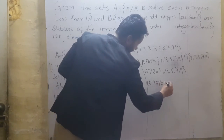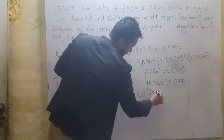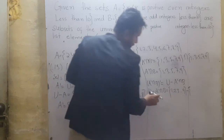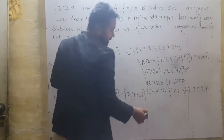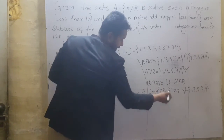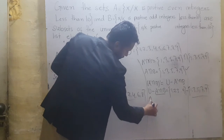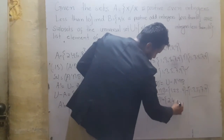Now whole complement solve करेंगे. A complement intersection B whole complement equals universal set minus (A complement intersection B). Universal set = {1, 2, 3, ..., 9} minus {1, 3, 5, 7, 9}. Difference means minus — if all odd numbers are subtracted from U, only even numbers remain. So (A complement intersection B) whole complement = {2, 4, 6, 8}.